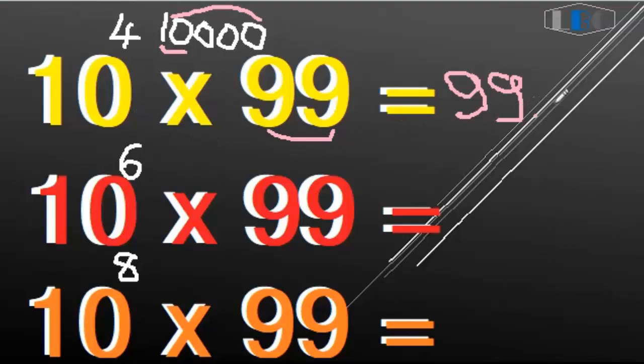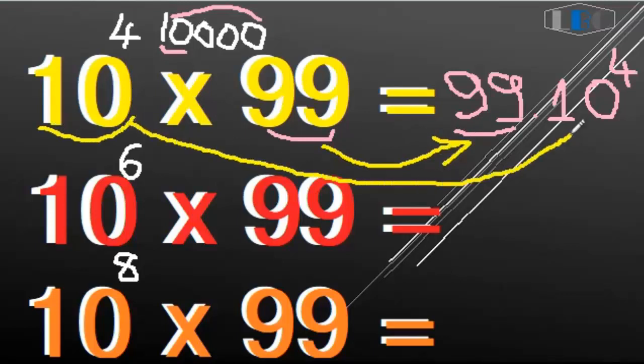The second answer: you can write 99.10 to the 4th. This means 99 you can just write from here, and 10 to the 4th you write from here. But we know that...